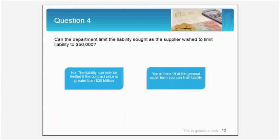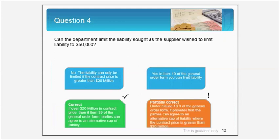Another question to consider would be: can the department limit the liability sought as the supplier wished to limit the liability to $50,000? The correct answer is no, the liability can only be limited if the contract value is greater than $20 million.